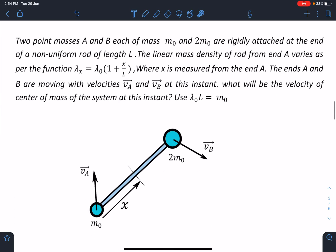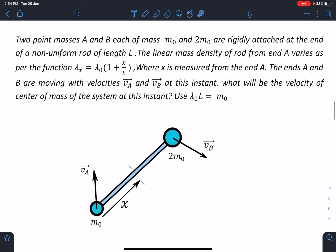Here is the problem statement. Two point masses A and B, each of mass M0 and 2M0 are rigidly attached at the end of a non-uniform rod of length L. The linear mass density of rod from end A varies as per the function lambda x equals lambda naught times 1 plus x by L, where x is measured from end A. The ends A and B are moving with velocities vector VA and VB at this instant. What will be the velocity of center of mass of the system at this instant? You can use lambda naught L equals M0.